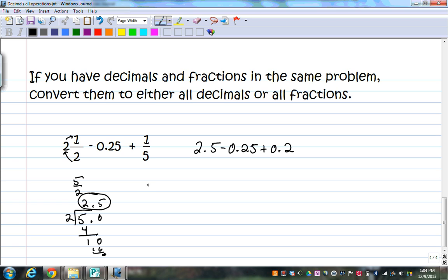So 1 fifth, the same thing. You would do 1 divided by 5, add your decimal right away because 5 doesn't go into 1, but 5 goes into 10, 2 times, there's no remainder, so it's .2, exactly what I have written to the side here.